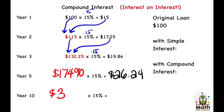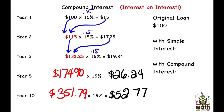Another ten years later — he still hasn't paid anything back — the loan has grown to $351.79, way bigger than the original $100. We find 15% again by multiplying by 0.15 and get $52.77 in interest. Look how much that's grown: from $15 a year with simple interest to now $52 after ten years. Imagine if twenty years go by — it just gets bigger and bigger.